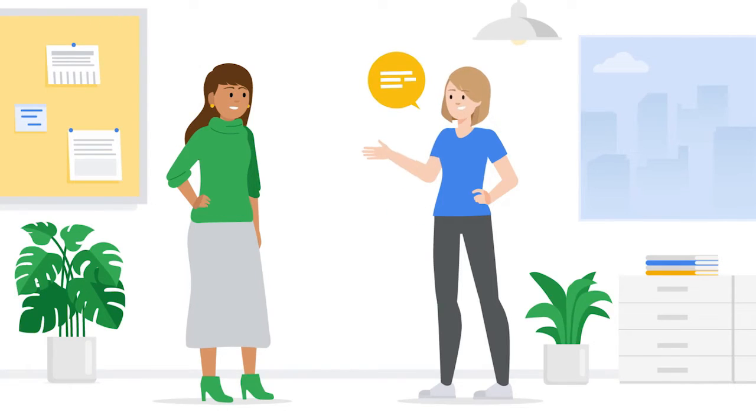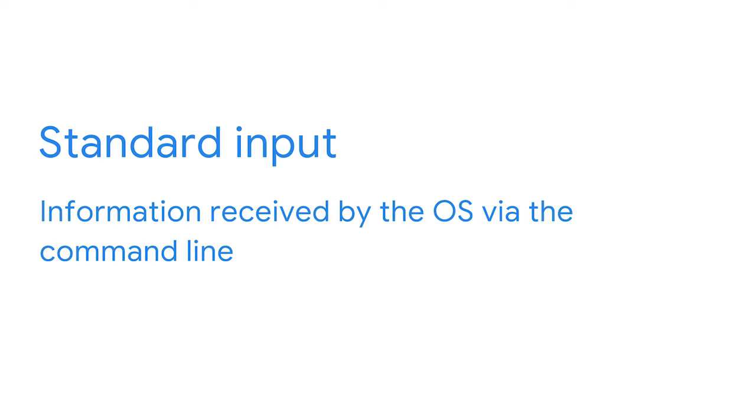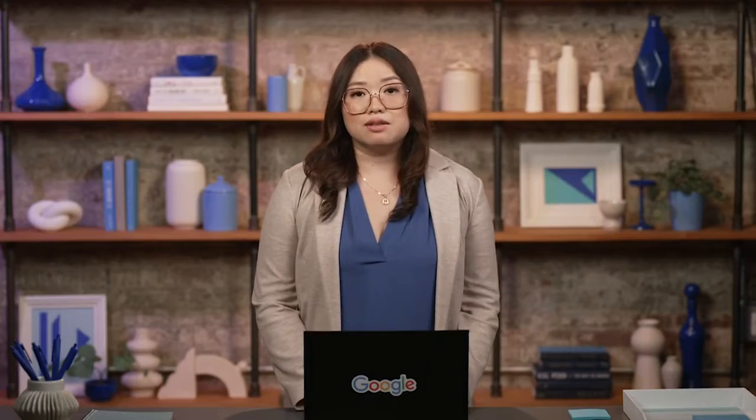Communicating with a computer is like having a conversation with your friend. One person asks a question and the other person answers with a response. When you communicate with the shell, the commands can take input, give output, or give error messages. Standard input consists of information received by the OS via the command line — like you asking your friend a question during a conversation. The information is input from your keyboard to the shell. If the shell can interpret your request, it asks the kernel for the resources it needs to execute the related task. Let's take a look at this through echo, a Linux command that outputs a specified string of text.